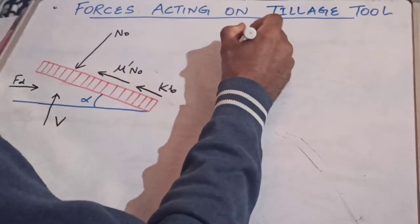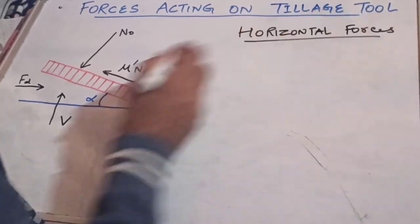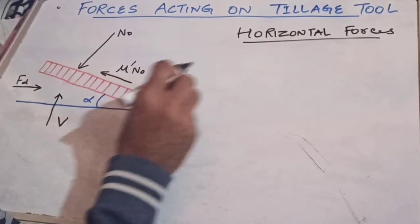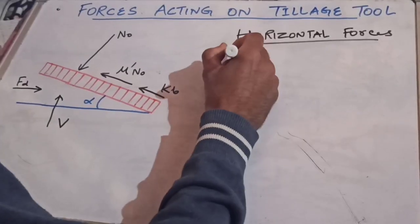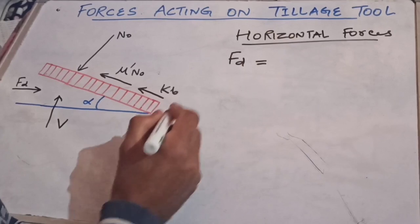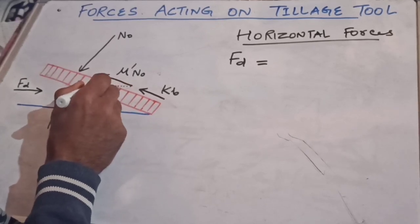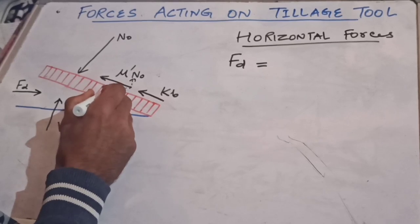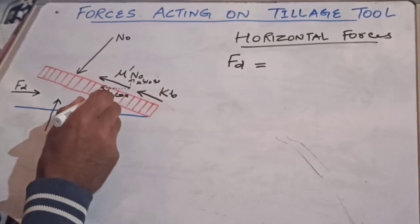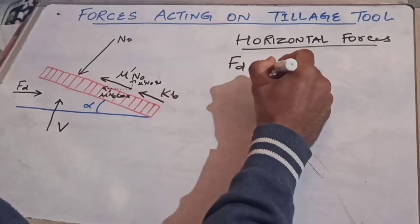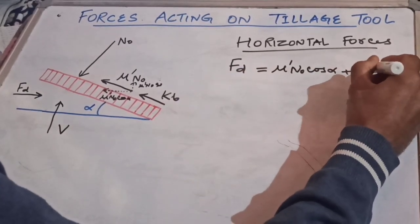Taking the horizontal forces, forces acting to the right are positive and to the left are negative. Resolving mu-dash×N0, the horizontal component is mu-dash×N0×cos(alpha) and the vertical component is mu-dash×N0×sin(alpha). So the draft force FD equals mu-dash×N0×cos(alpha) plus K×B×cos(alpha). When resolving the normal force, unlike typical resolution, the normal force reverses — so N0 contributes N0×sin(alpha) horizontally.